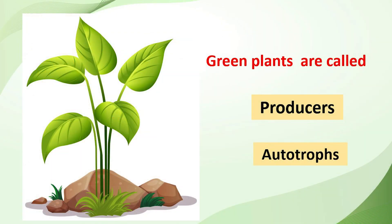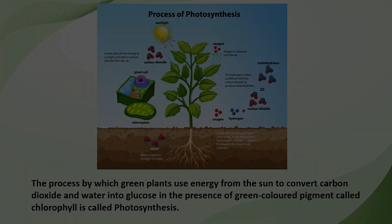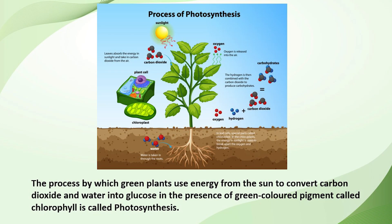Green plants are called producers or autotrophs as they prepare their own food — for example, algae along with all green plants, and some bacteria and fungi. Green plants use energy from the sun and, in the presence of the green color pigment called chlorophyll, they convert carbon dioxide and water into glucose and release oxygen. This process is called photosynthesis.